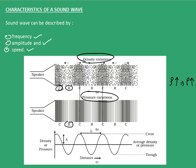Near to the speaker, we have a compression region. Therefore, the density or pressure is high in that region. As we move on to the rarefaction region, the density or pressure reduces below the average density or pressure. This continues alternatively. Hence, these variations in density and pressure would help us to relate the frequency, amplitude and speed of the sound wave.